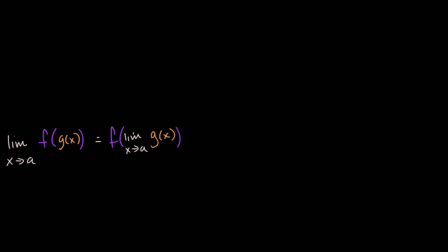And what are those circumstances you are asking? Well, this is going to be true if and only if two things are true. First of all, this limit needs to exist. So the limit as x approaches a of g of x needs to exist.